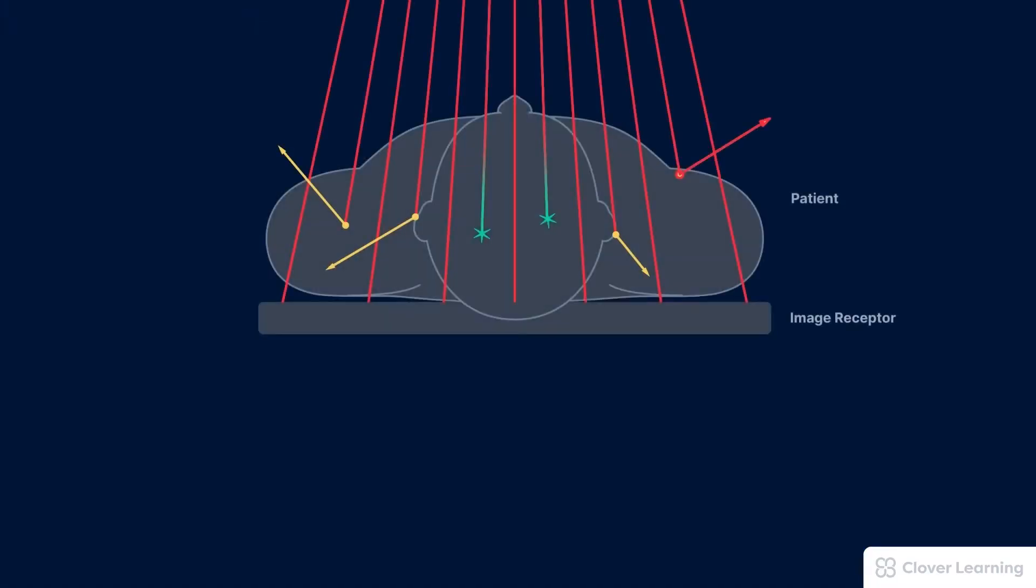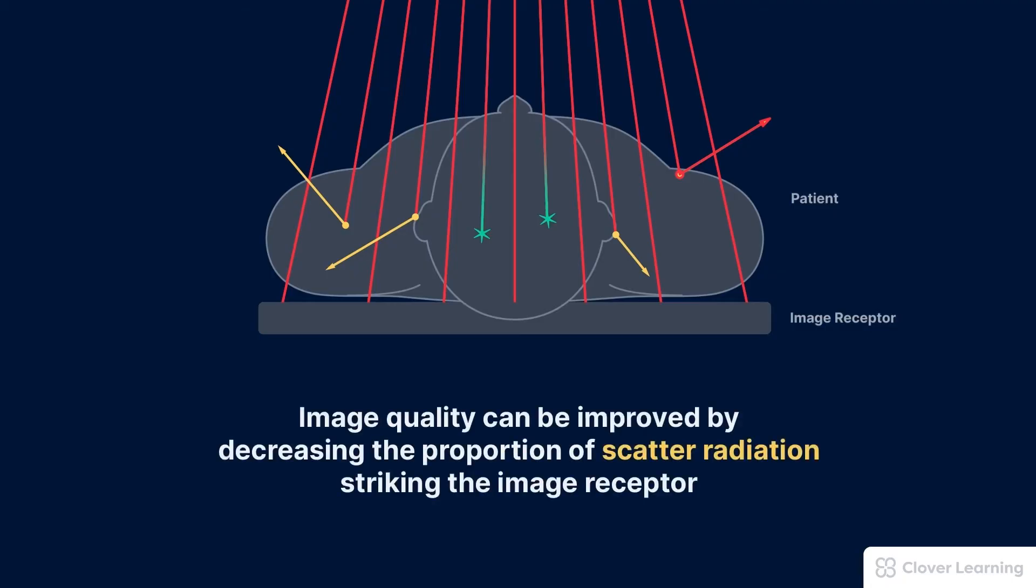Digital radiography processing is quite effective at maintaining optimal image contrast even when scatter radiation is high. Still, radiographic image quality can be improved by decreasing the proportion of scatter radiation striking the image receptor. There are several ways to do this, such as using collimation to create a small exposure field and using other beam limiting devices. But even when these methods are used, there is still scatter created in the patient that can be removed by using a radiographic grid.